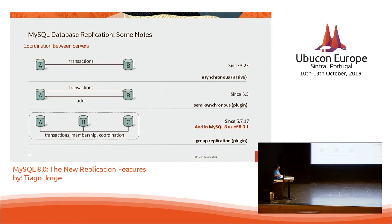The story of replication: it started in 3.23 with simple asynchronous replication — easy to configure, available out of the box since then. Since 5.5 we have semi-synchronous replication, which is basically the same but with an acknowledgement — you only release the transaction when you receive confirmation that it is ready to be committed. And today we'll focus on the next generation of replication, which is group replication — the shared-nothing solution that is embedded within MySQL today.